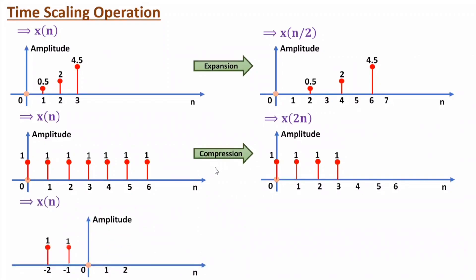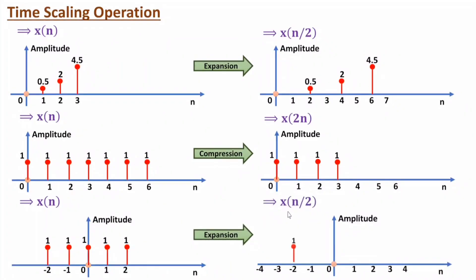Let me take one more example. Here we have a signal and we need to perform expansion as per x(n/2). The reference stays in place. The element at n=-1 moves to n=-2, the element at n=-2 moves to n=-4, the element at n=1 moves to n=2, and the element at n=2 moves to n=4. The vacant spaces will have zero value.